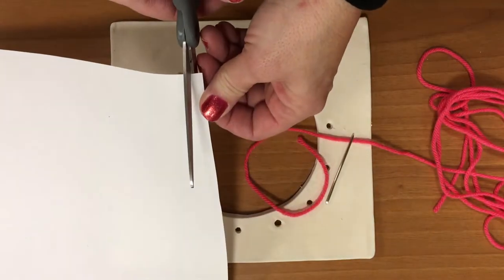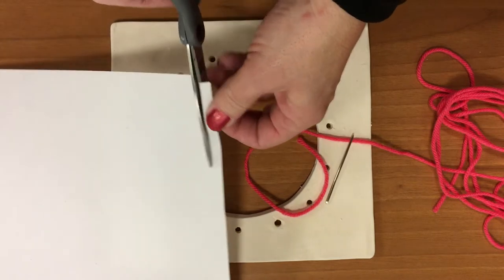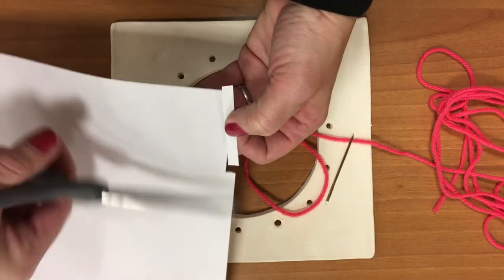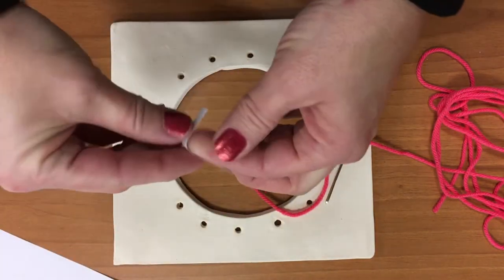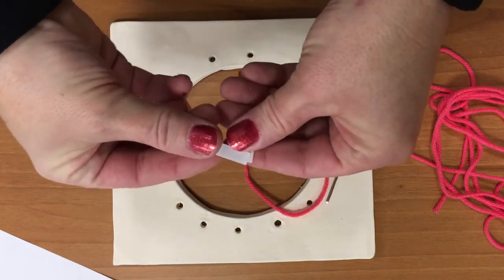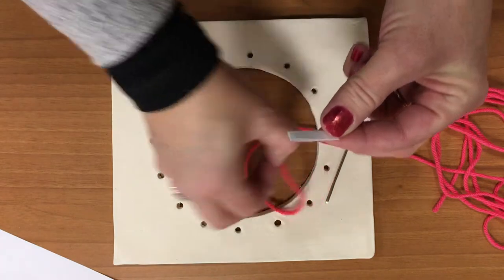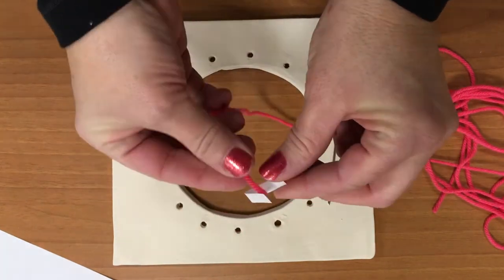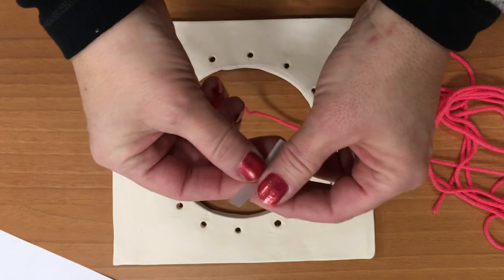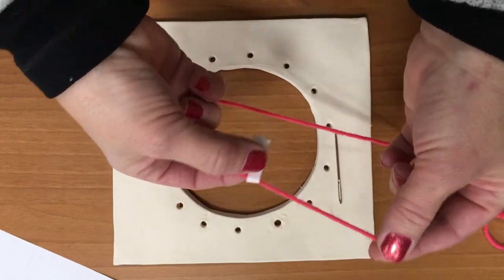If it's troublesome for you, you can cut a little strip of paper like this, fold it in half like this, and then place your yarn inside here, like such.